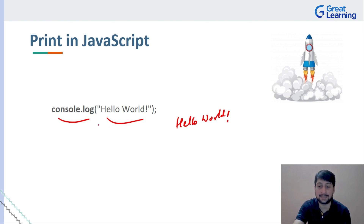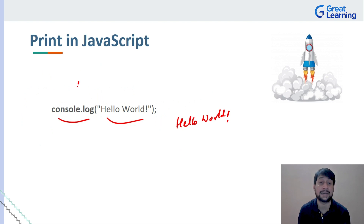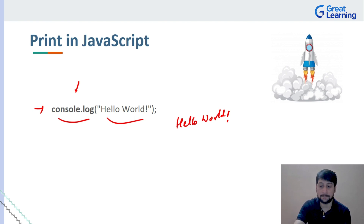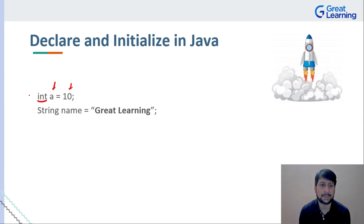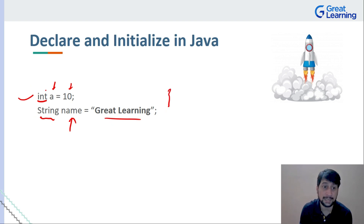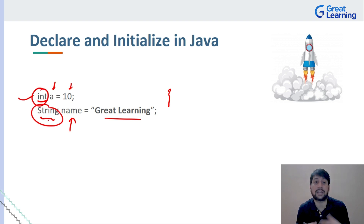One key difference: in Java, everything must be inside a class, but in JavaScript that is not restricted — it is recommended but not required. Now, if you want to declare or initialize something in Java, you first declare the data type, then the variable name, then its value. For a string, you use the String class, then the name, then the value. You must explicitly specify the data type.